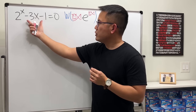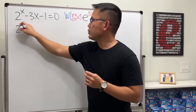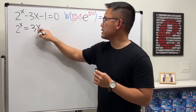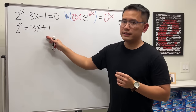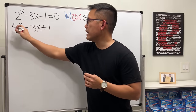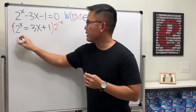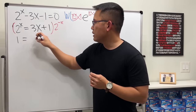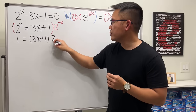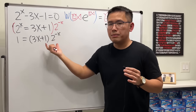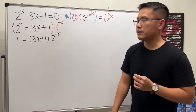Let me show you. Bring the two terms to the other side so we get 2^x = 3x + 1. Then divide both sides by 2^x — equivalently, multiply by 2^(−x) — so we get 1 = (3x + 1) · 2^(−x). The function part is now multiplied, and the constant 1 will just work with it.